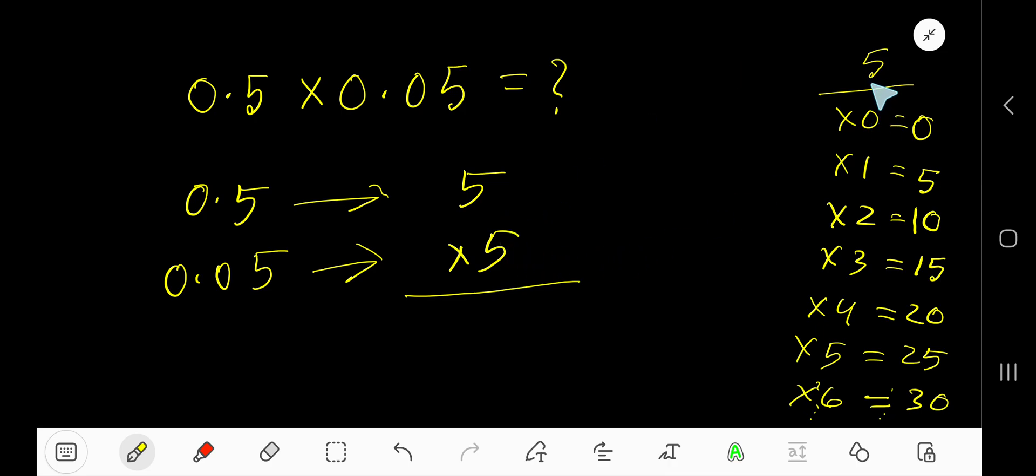We need the multiplication table of 5: 5 times 0 is 0, 5 times 1 is 5, 5 times 2 is 10, 5 times 3 is 15, 5 times 4 is 20. To find the multiplication table of 5, just add 5 to the previous step: 0 plus 5 is 5, 5 plus 5 is 10, 10 plus 5 is 15, 15 plus 5 is 20, 20 plus 5 is 25.